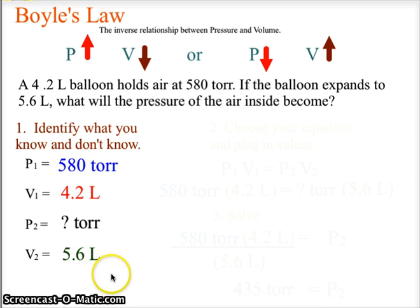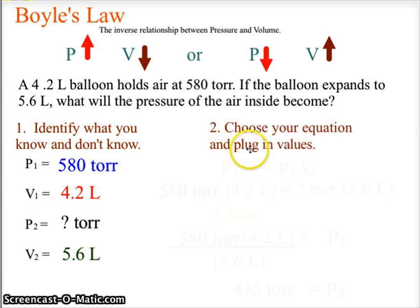Our pressure is what we are looking for. What will the new pressure be inside the balloon if we increase the volume to 5.6 liters? We are going to choose our equation and plug in the values. Of course we are using Boyle's Law, and Boyle's Law is P1V1 equals P2V2.